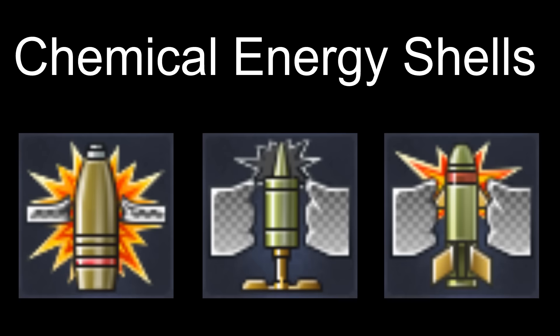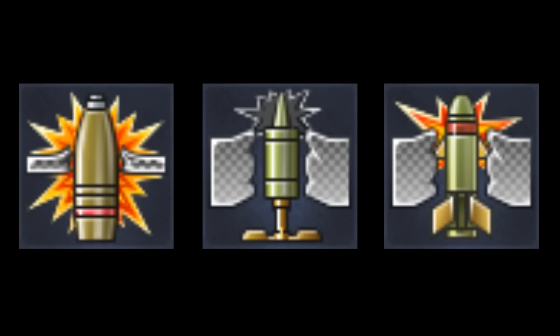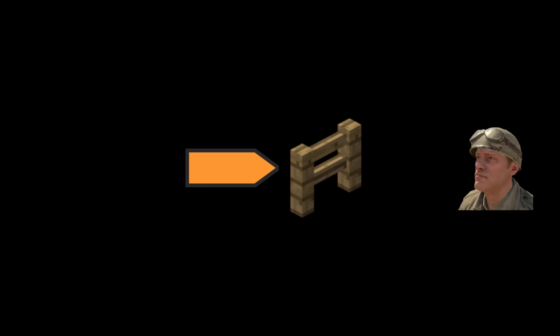Up next are the chemical energy shells. Instead of relying on mass and velocity, chemical energy shells use a chemical reaction to penetrate the enemy armor. Since velocity isn't a factor with these shells, they have the same penetration values over all distances. But since these shells rely on a chemical reaction, they will get detonated when they come in contact with anything, so you need to watch out for trees, fences, and other objects in the way.